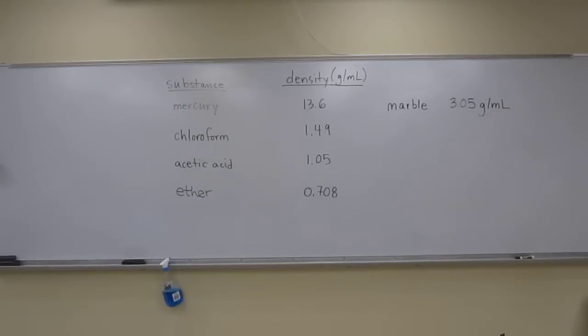Okay, so we'll do this density-type problem. It says a glass cylinder contains four separate liquid layers.